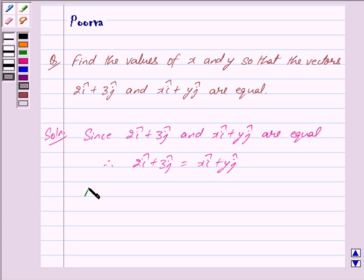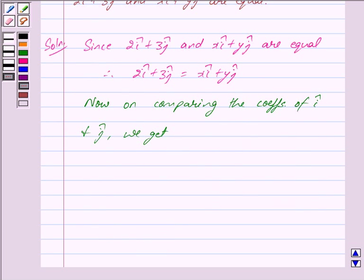Now, on comparing the coefficients of i cap and j cap we get: On comparing the coefficients of i cap we get 2 is equal to x. We have 2 is equal to x and on comparing the coefficients of j cap we get 3 is equal to y.